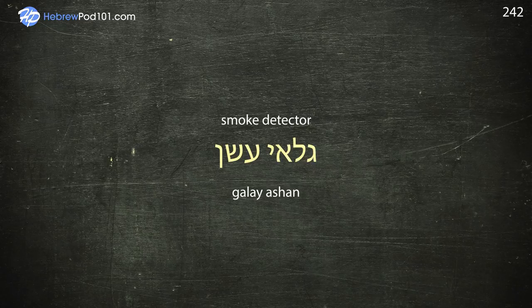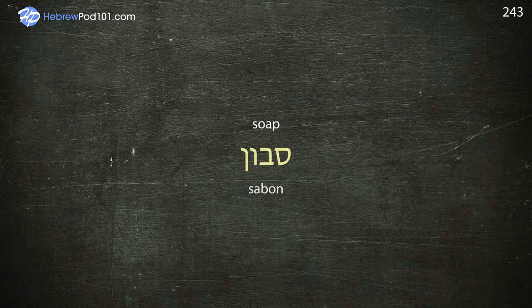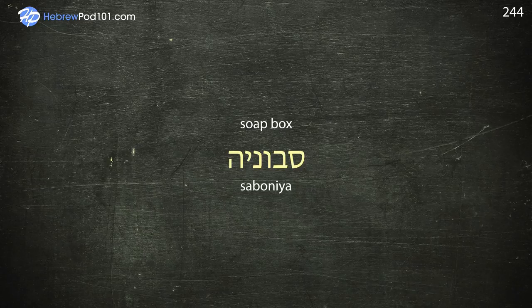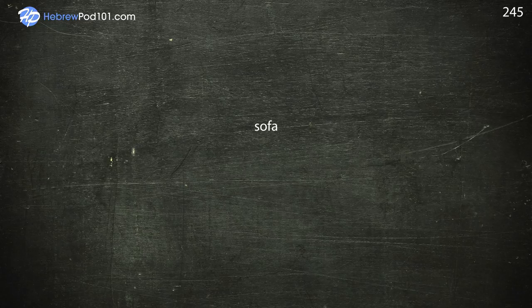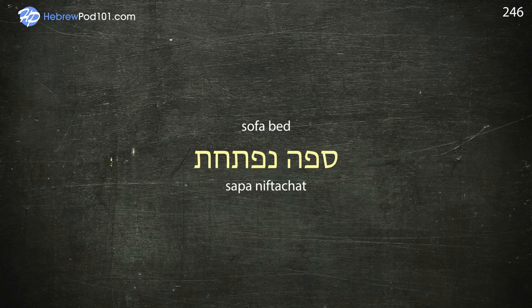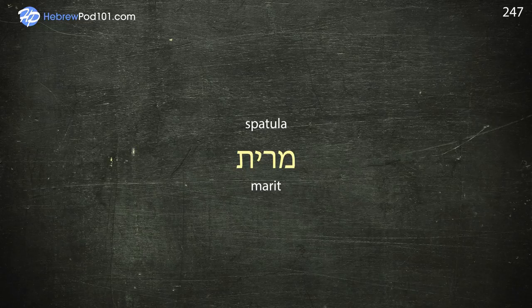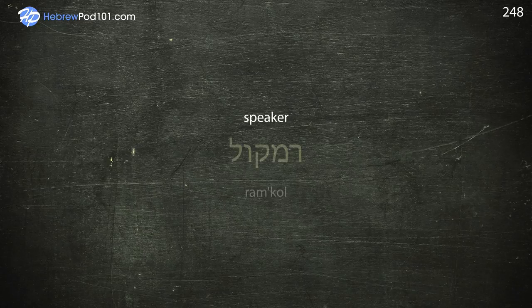Soapbox — Sabonia. Sofa. Sofa bed — Sapa Niftachat. Spatula — Marit. Speaker — Ramkul.